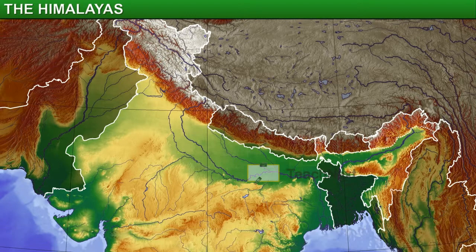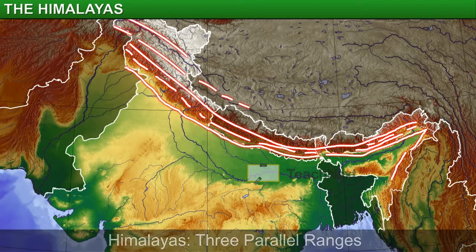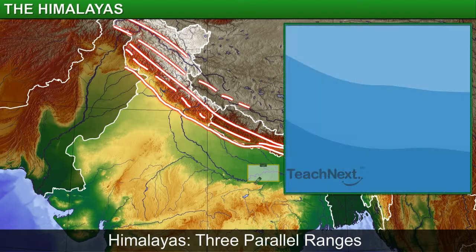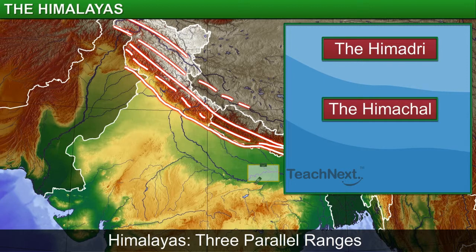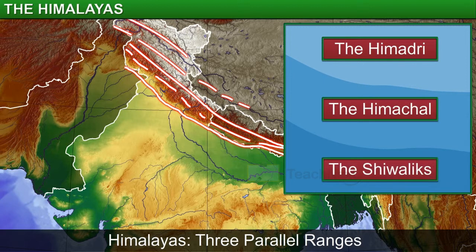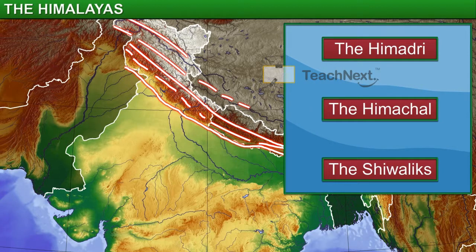The Himalayas are formed from three parallel ranges of mountains: the Himadri, the Himachal, and the Shivaliks. Several valleys lie between these mountain ranges.